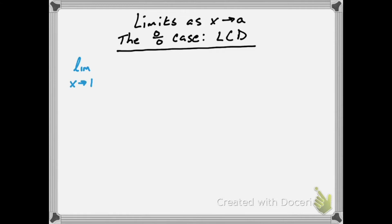In this example, the limit as x approaches 1, of 4 over x plus 1 minus 2, all over x minus 1.